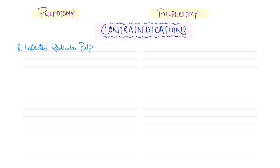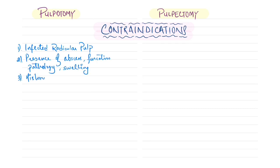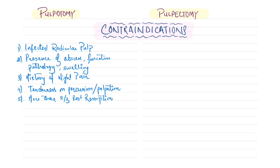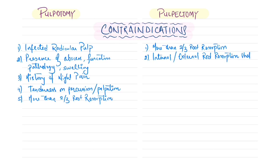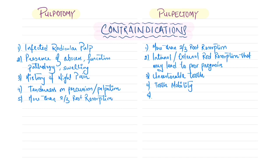Contraindications for pulpotomy: infected radicular pulp; presence of abscess, furcation pathology, or swelling; history of night pain; tenderness on digital percussion or palpation; and more than two-thirds root resorption. Contraindications for pulpectomy: more than two-thirds root resorption; internal or external root resorption leading to poor prognosis; unrestorable tooth; tooth mobility; and presence of an underlying cyst such as a dentigerous or follicular cyst.